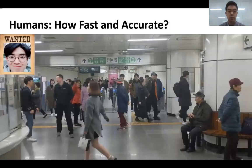How good are we at finding a person in crowded scenes? For example, take a look at the picture that we have taken in a crowded subway station. Can you try finding where this man on the left top is in the scene? Actually, he is over here. Most of you will have had a problem finding him very quickly.